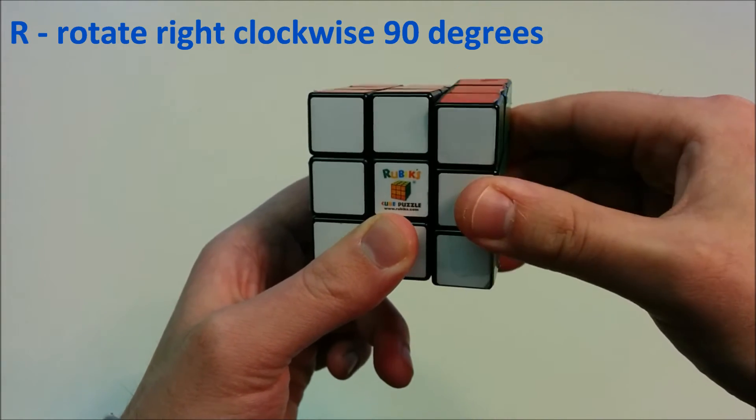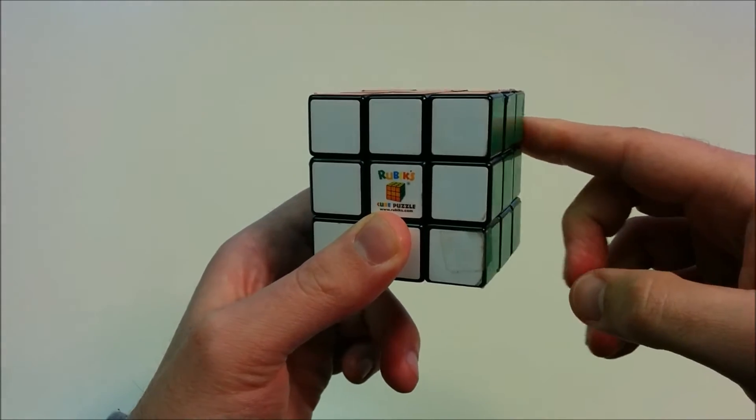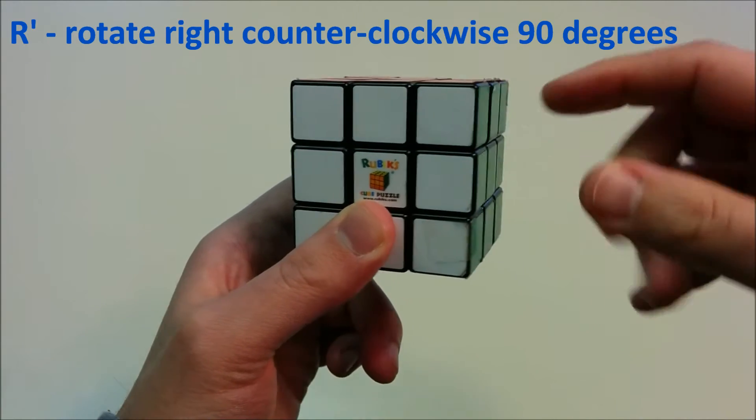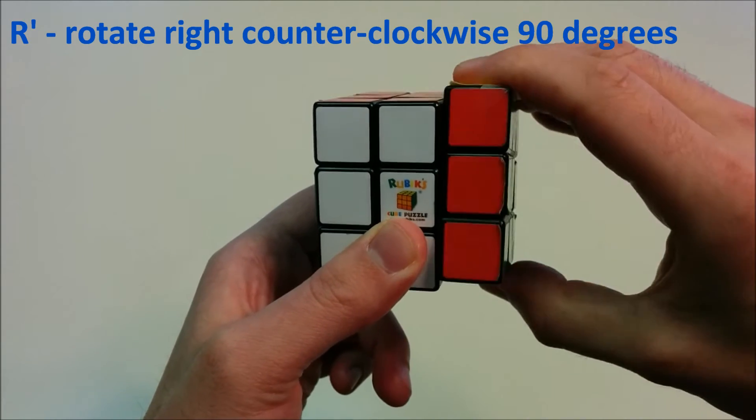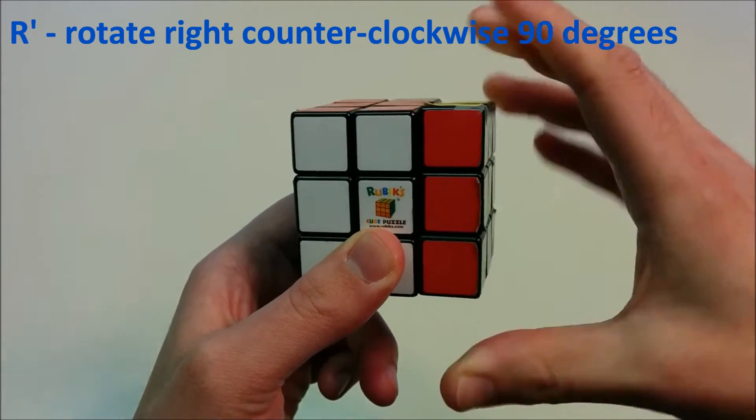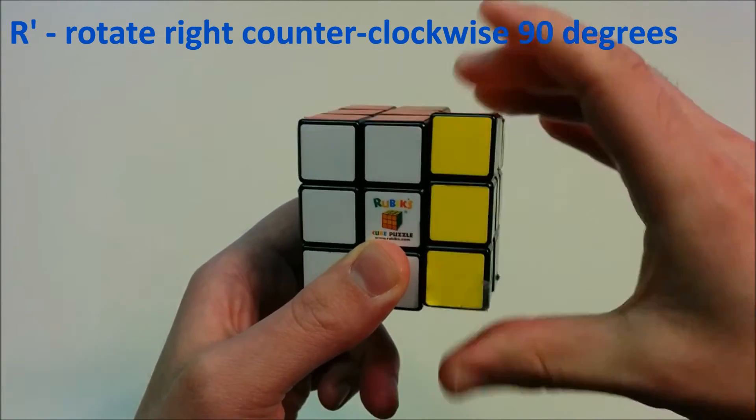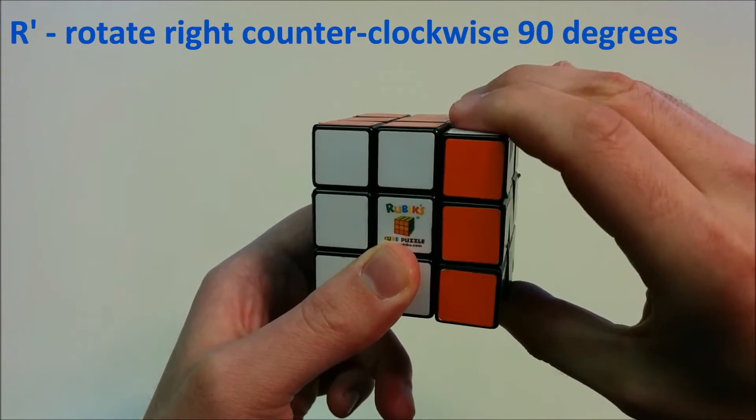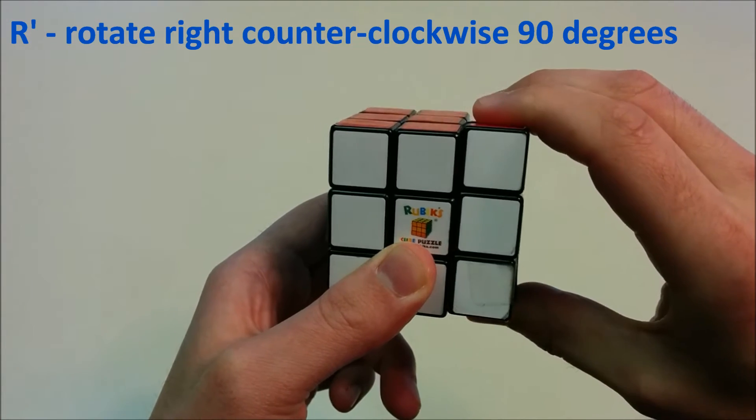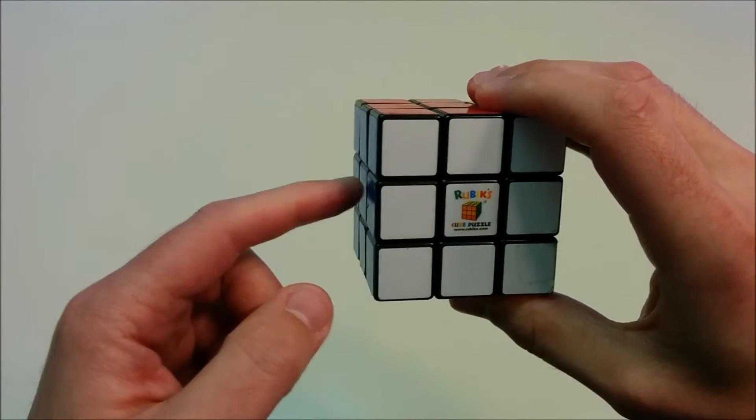We can repeat the move of R four times and bring the right side back to the original position. There's also the move of R prime or R inverse, which is a 90 degrees counter-clockwise move.